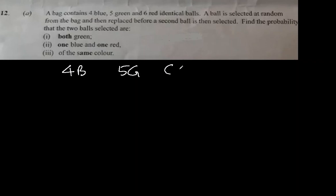Question 12a. A bag contains four blue, five green, and six red identical balls — identical means you can't differentiate between them. A ball is selected at random from the bag and then replaced. This is good news that it is replaced; if it was not replaced it would be difficult. Before a second ball is selected, find the probability...